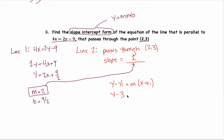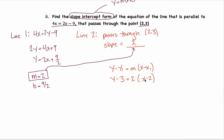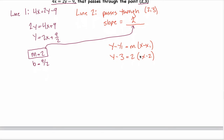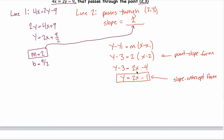That gives me y minus 3 equals 2 times x minus 2. If it just asked for any equation of the line parallel to 4x equals 2y minus 9 through this point, I'd be done. But since it explicitly asked for slope-intercept form, I'll convert. Distributing the 2 gives 2x minus 4, then adding 3 to both sides gives y equals 2x minus 1. That's my final answer.